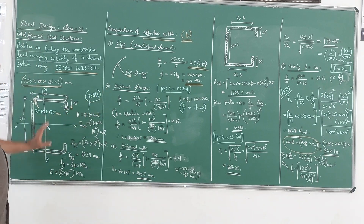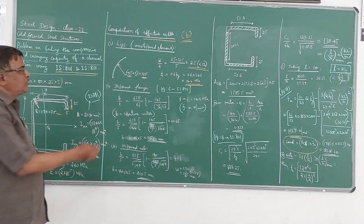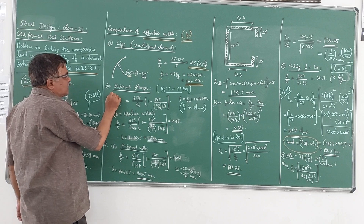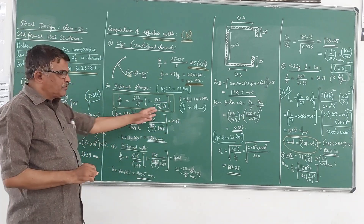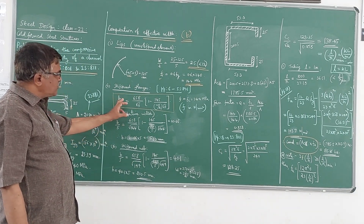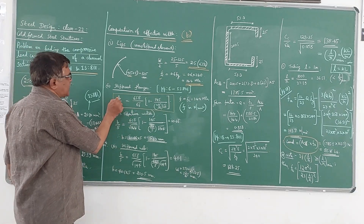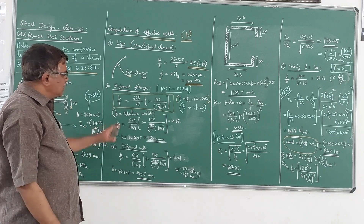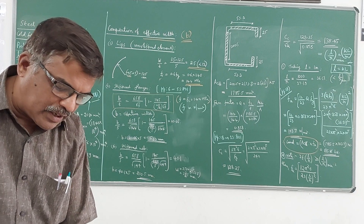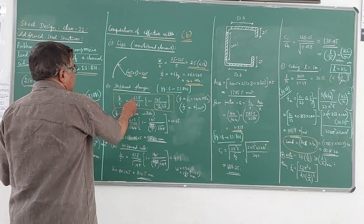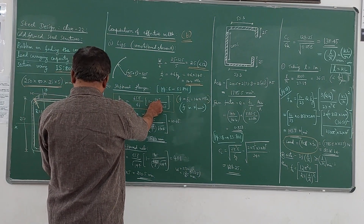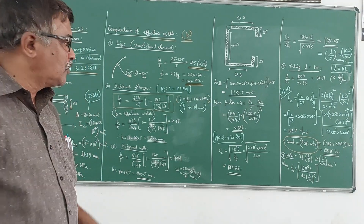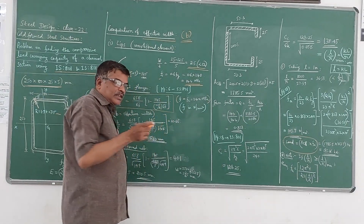Coming to the flanges — there are two flanges. Referring to page 6 of IS801, there is a relation giving B/T in terms of F. We have to use both codes here: IS801 and IS811. Based on the equation in the code, we have to calculate the effective width, where B is the effective width, T is the thickness, and F is the stress taken as Fc = 144 MPa. In the code, when F is expressed in kg/cm², the formula is B/T = 2120/√F with a limiting value of 465.